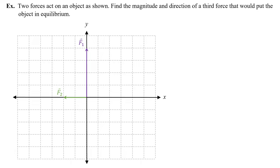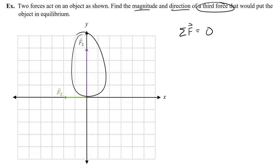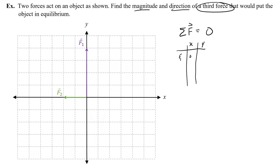Here's a great equilibrium problem. Two forces act on an object as shown. Find the magnitude and direction of a third force that would put this object in equilibrium. What would a third force have to be to balance these two forces? That means we want the sum of all forces to be 0. F1 has no x component and positive 4 for the y component. F2 has negative 2 for the x component and 0 for the y component.